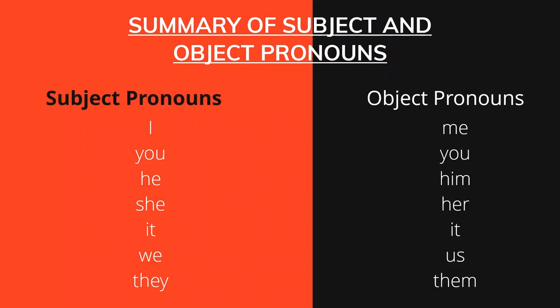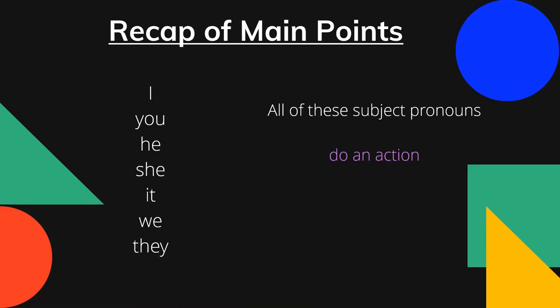Let us go through the summary of subject and object pronouns for this lesson. Subject pronouns are: I, you, he, she, it, we, they. Object pronouns are: me, you, him, her, it, us, them.